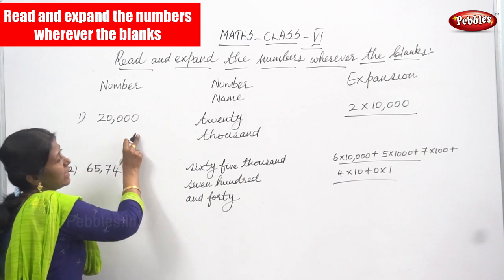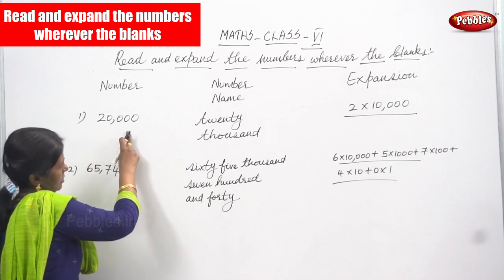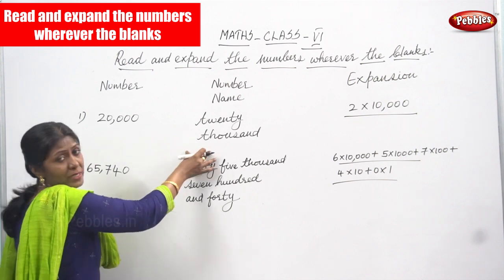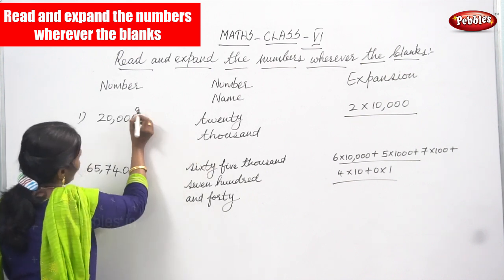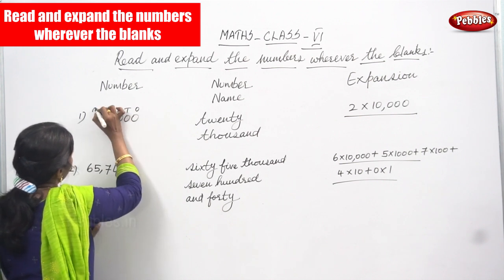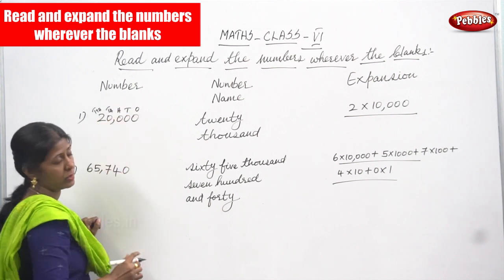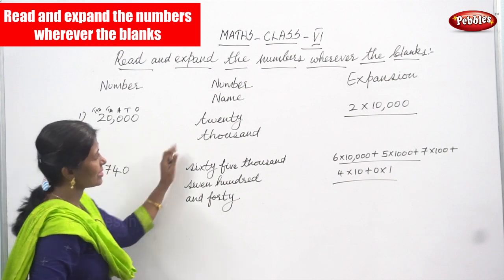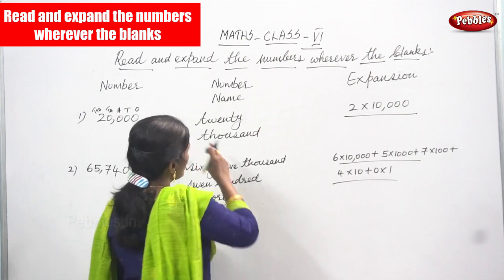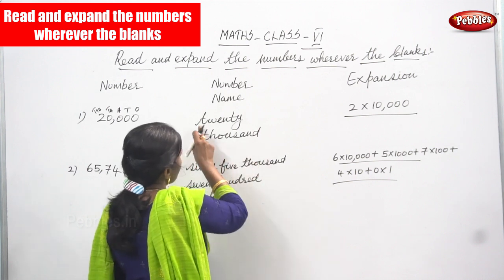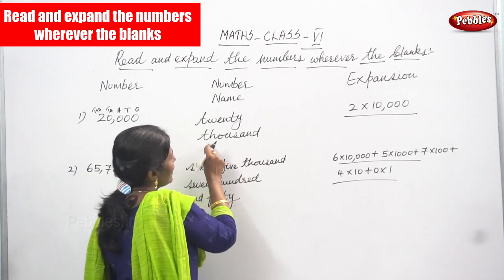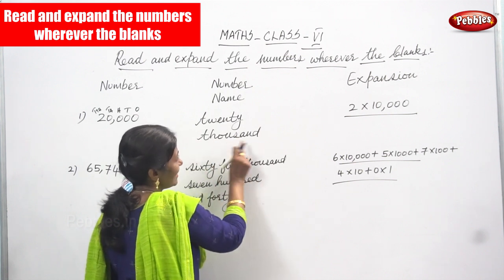The first question is 20,000. What is the number? 20,000. I have written this 20,000 in number names — that means in words. The place values are ones, tens, hundreds, and TTH meaning 10,000. So 20,000 in words is TWENTY THOUSAND.